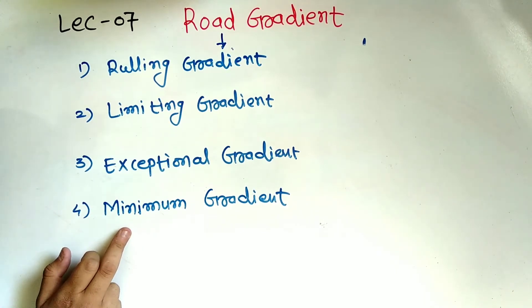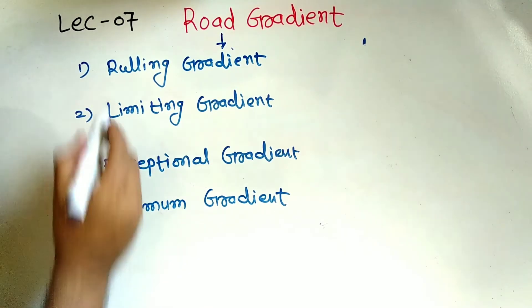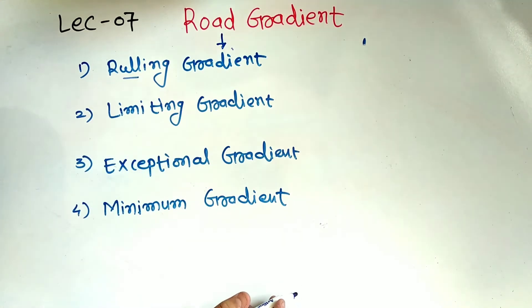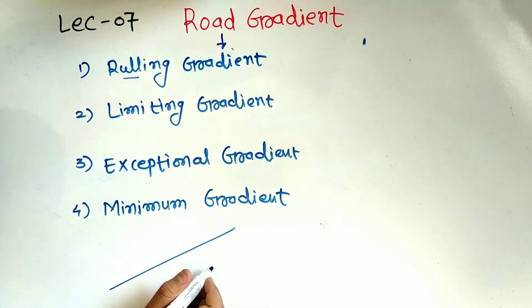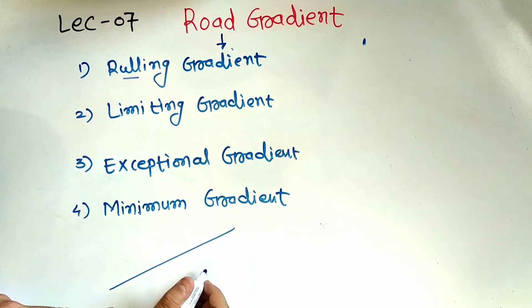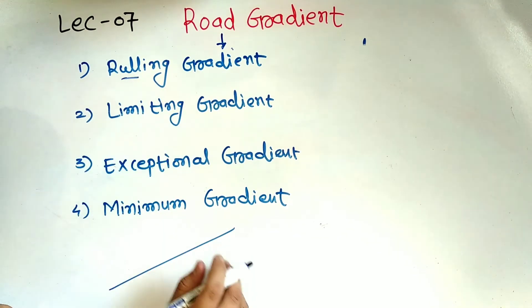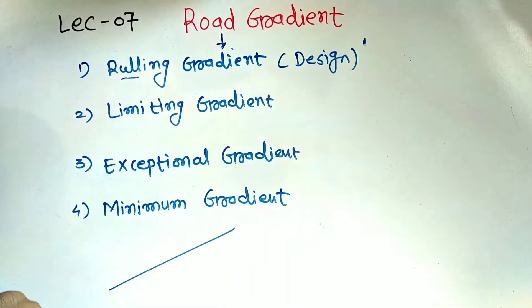Now let's talk about what we mean by the ruling gradient. The ruling gradient is the design gradient that the engineer adopts — it is the gradient which we can use under normal conditions with minimum cost.